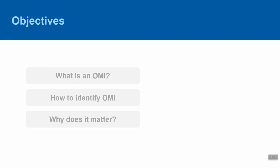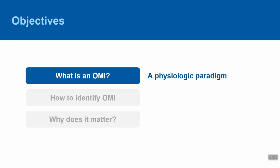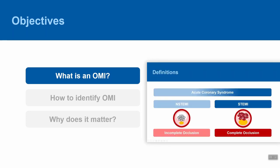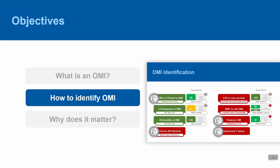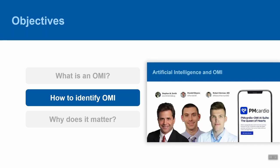In this primer, we'll see that occlusion myocardial infarction, or OMI, is a physiologic paradigm which places the underlying pathology at the top of the schema rather than a single segment of the ECG. We will review a relatively simple 8-to-10 step approach for identifying OMIs, employing rules which carry a high level of specificity, and we'll see how artificial intelligence can help assist us in making these decisions.